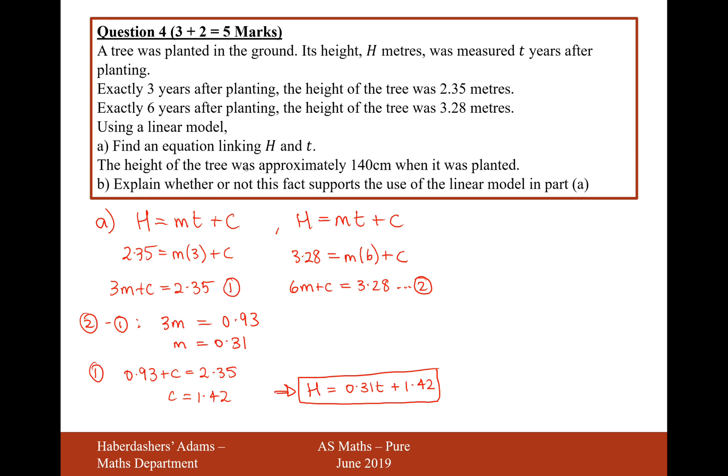Moving on to part B. The height of the tree was approximately 140cm when it was planted. Explain whether or not this fact supports the use of a linear model. I'd say yeah, it does pretty much, yes. Because 1.42m is very close to 140cm in the actual question. So yeah, I'd say this is pretty approximate as a linear model.